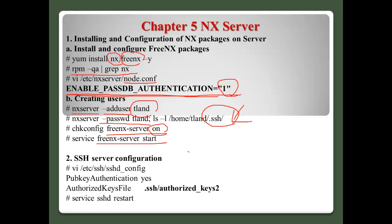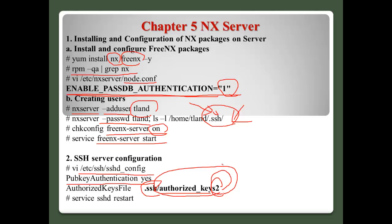Number two - SSH server configuration. As I mentioned, the NX server is implemented based on SSH. In the SSH main configuration file, we have to activate public key authentication and set the authorized keys file. The default is just 'authorized_keys', but we have to add number two - 'authorized_keys2' - because when NX server creates the password, the key name matches this format. After that, restart the SSH service.